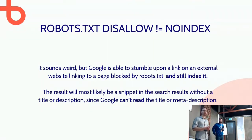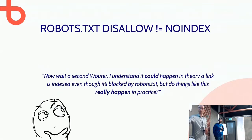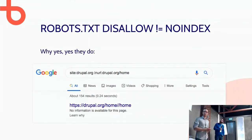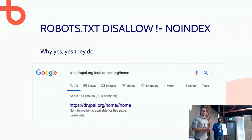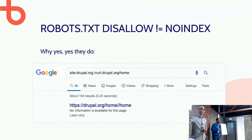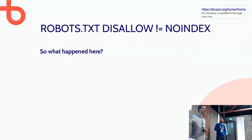It does sound weird that someone could link to a page and, even though you're blocking it in robots.txt, it's still indexed. On drupal.org there is a strange home slash slash homepage indexed — it's been there for years and hasn't been fixed. Looking at the robots.txt, there's a comment: 'Googlebot picked up strange home page URLs.' What they should do is remove that robots.txt line and simply add a noindex meta tag — that would fix it almost instantly.